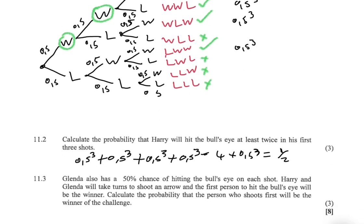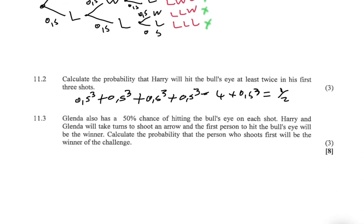Now let's move to question 11.3. Glenda also has a 50% chance of hitting the bull's eye on each shot. Harry Maguire and Glenda will take turns shooting an arrow, and the first person to hit the bull's eye will be the winner. Calculate the probability that the person who shoots first will be the winner of the challenge.